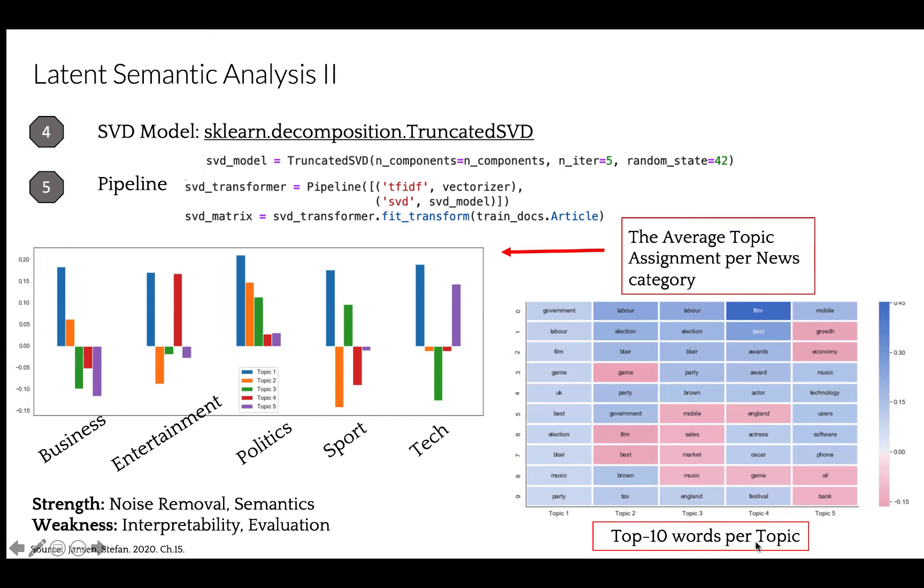The strengths of LSI include the removal of noise and dimensionality reduction, and it does capture some semantic aspects as you've seen. Another advantage, it does not require knowledge of the document language, and we can easily compare documents. However, there is a weakness. The results of LSI are difficult to interpret, because as you can see, topics are vectors with both positive and negative directions. There is also no underlying model with the evaluation of fit, and there is no test for selecting the number of dimensions or topics to use. Here we used five, just because we have five categories in our articles.